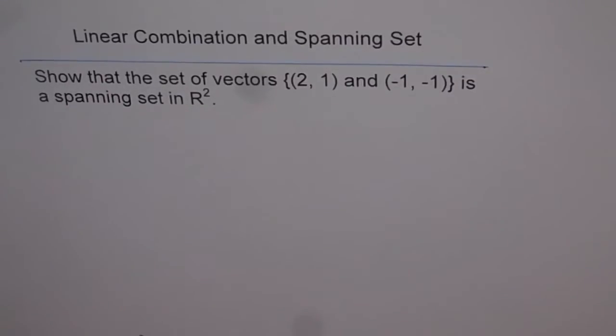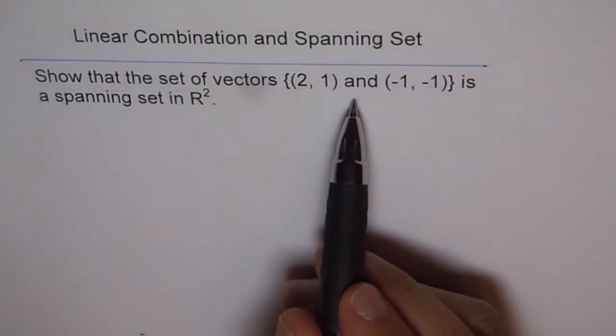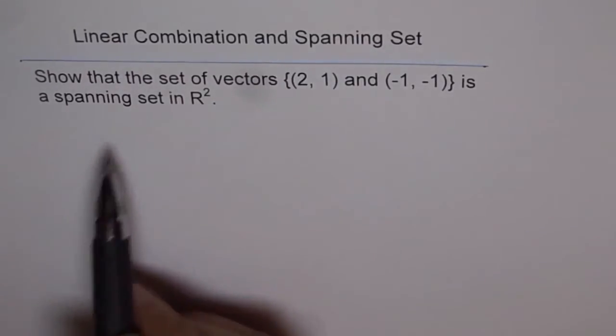Linear Combination and Spanning Set. Show that the set of vectors (2, 1) and (-1, -1) is a spanning set in R².